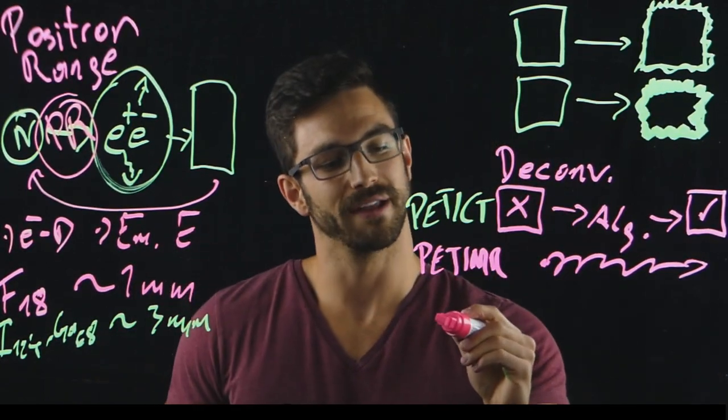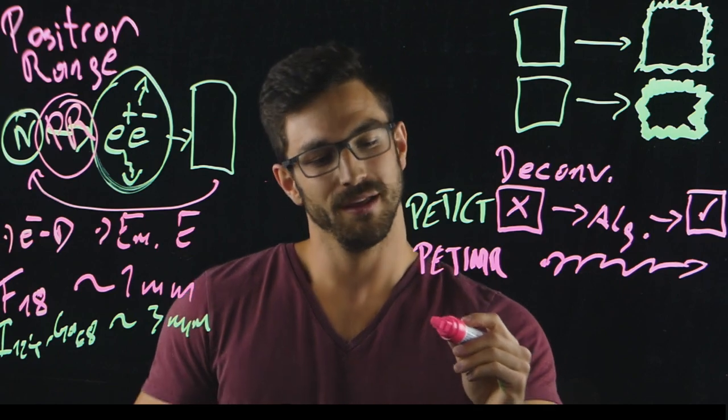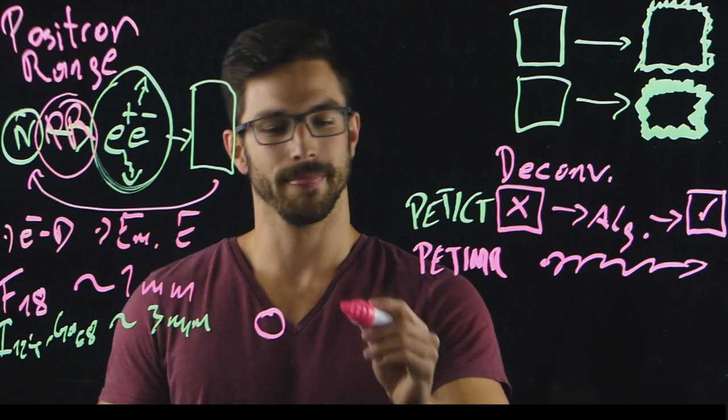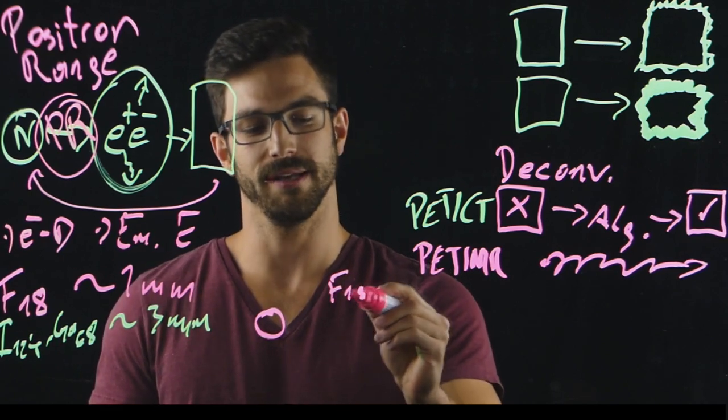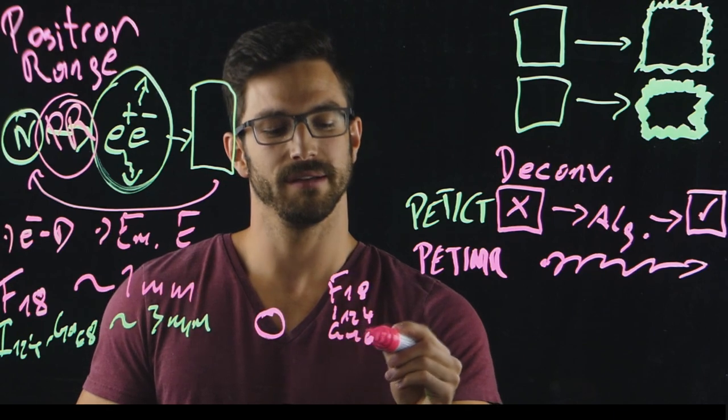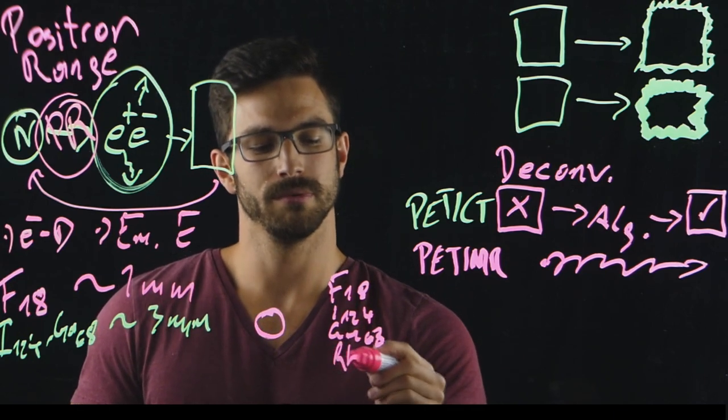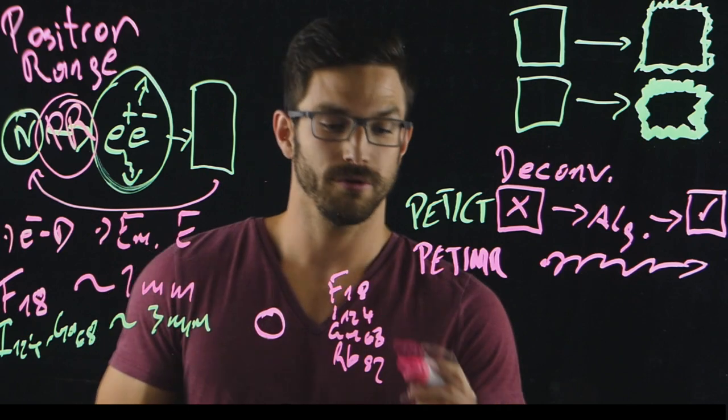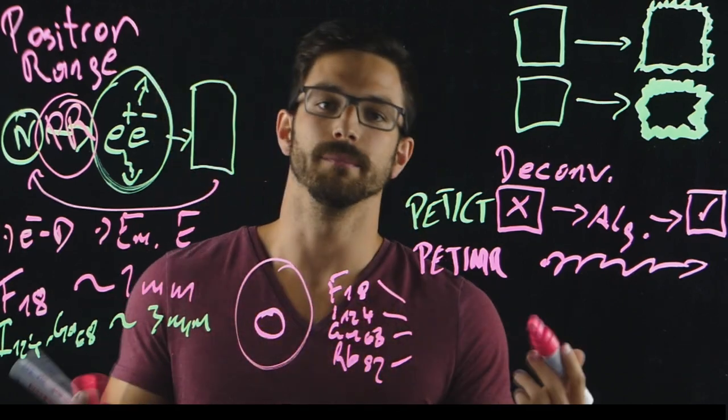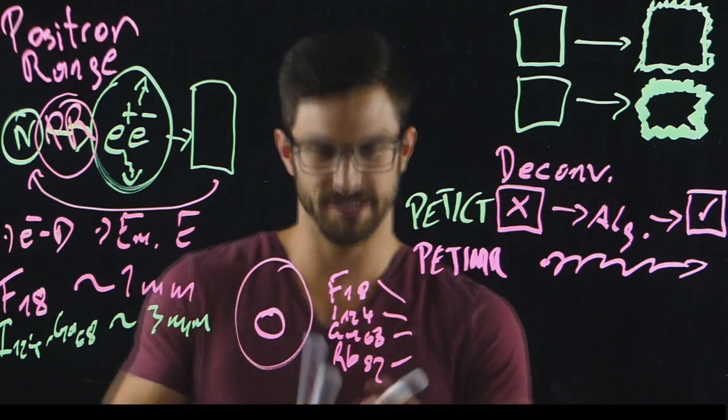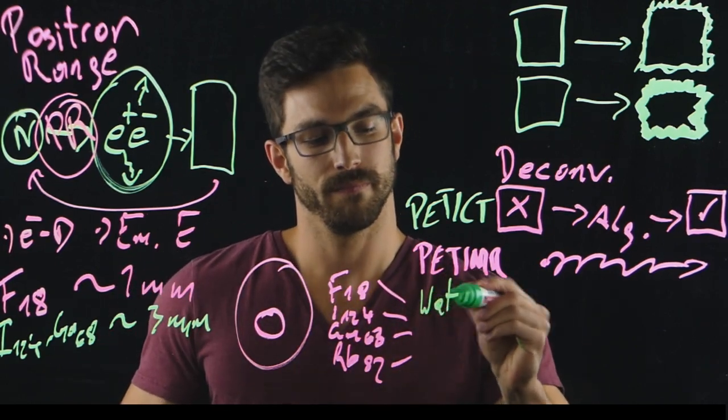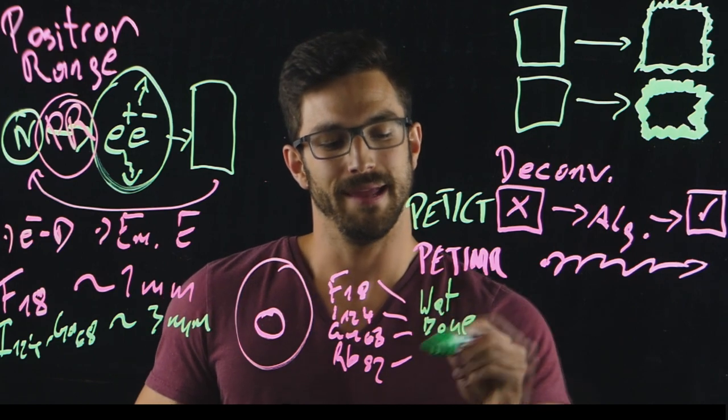Well, what did we do? We did the Monte Carlo simulation setup as follows. We set up a point source of, first of all, fluorine-18, iodine-124, gallium-68, as well as rubidium-82. We used these four tracers and what we did was we placed the tissue around it. In PET, the most important tissues are actually water, bone, and lung.